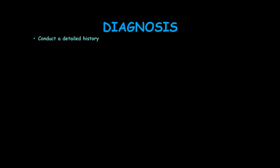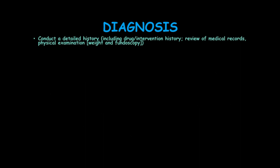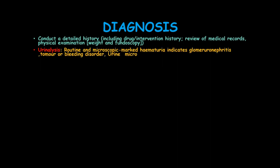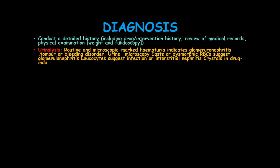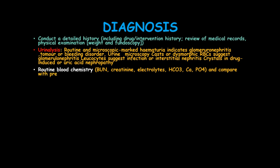For diagnosis, conduct a detailed clinical history including drug and intervention history and review of medical records, plus physical examination including weight and fundoscopy. Urinalysis: routine and microscopic examination — hematuria indicates glomerulonephritis, tumor, or a bleeding disorder. Urine microscopy showing casts or dysmorphic red blood cells suggests glomerulonephritis. Leukocytes suggest infection or interstitial nephritis, and crystals suggest drug-induced or uric acid nephropathy. Blood chemistry includes blood urea nitrogen, creatinine, electrolytes, bicarbonate, calcium, and phosphate, compared with previous results.